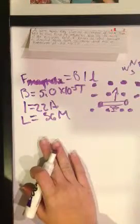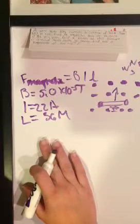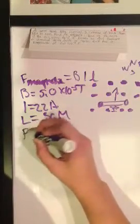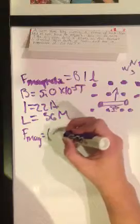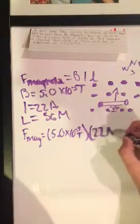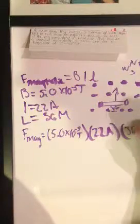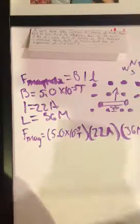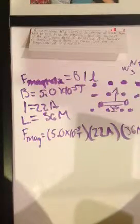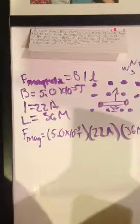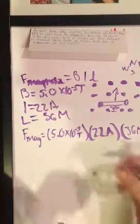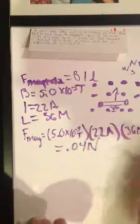So to find the magnitude, to find the magnetic force on the wire, we have to do F magnetic equals 5.0 times 10 to the negative 5th tesla times the current of 22 amperes times the length of 36 meters. If we do all of this, we get 0.04 newtons.